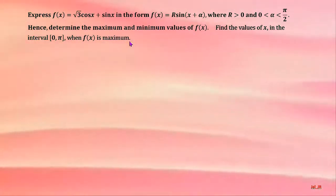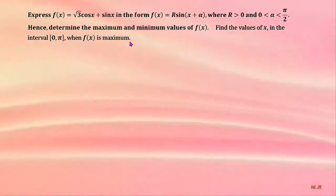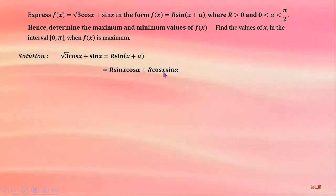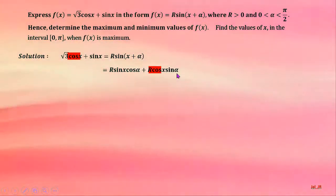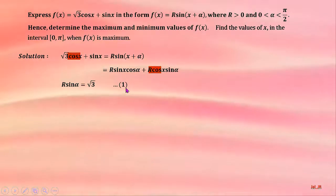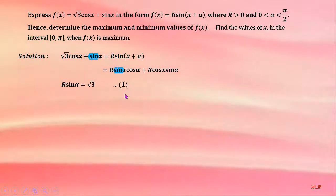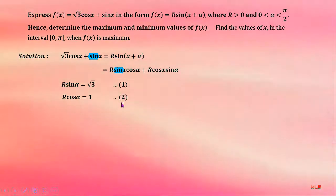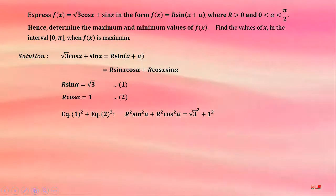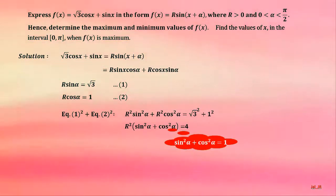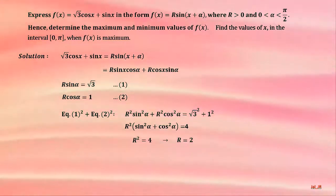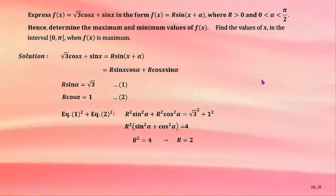First step: use the compound angle formula. Second step: compare the coefficient of cosine(x) to get equation one, and compare the coefficient of sine(x) to get equation two. Third step: solve for r — square both sides of the equations and add them together. Factor out r squared and use the trigonometric identity to simplify the expression inside the brackets. r is ±2, but we choose the positive value as requested in the question.